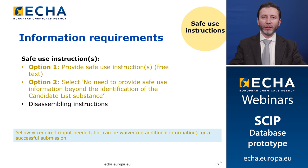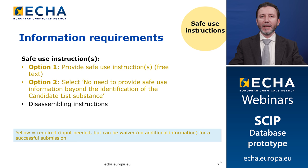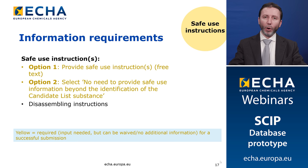Regarding the safe use instructions, these are information or instructions that you need to provide to communicate in the supply chain and also to notify ECHA, so that it will be accessible in the SCIP database. These instructions will allow any user of the article or your product to use it safely, given the presence of the candidate list substance in that article. You can also voluntarily upload disassembling instructions that could be useful for disassemblers at the waste stage of your product.